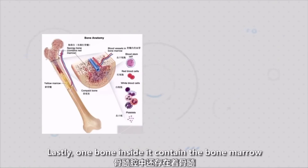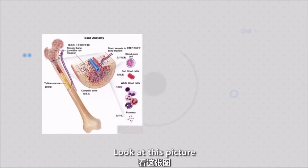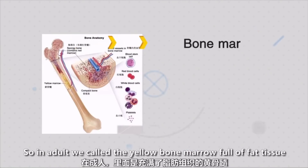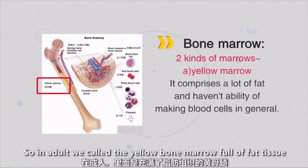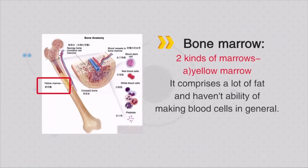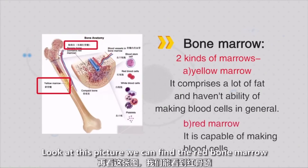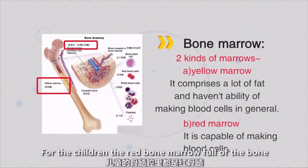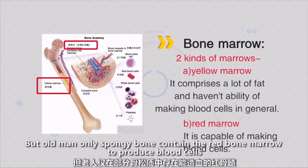The last one: inside a bone we contain bone marrow. On the medullary cavity, in the trunk of the long bone, in adults we call it yellow bone marrow — full of fat tissue — and sometimes it has no ability to produce blood cells. Then in the sponge body substance we find the red bone marrow, which can produce blood cells. For children, the red bone marrow fills the whole bone to produce blood cells. But in older people, only the sponge body substance contains red bone marrow and can produce blood cells.